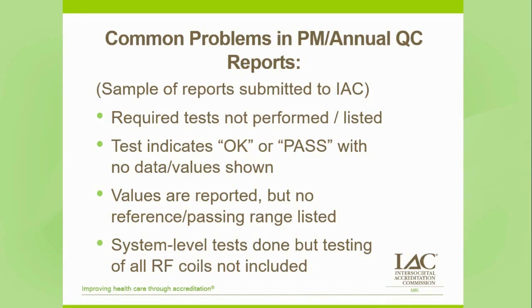We'll see just an 'okay' or a 'pass,' or we'll see a value like 129, but no indication of whether 129 is good, great, or terrible. And in looking at the individual RF coils — because those are the key interface for the signal coming from the patient getting into the system — we need to have all system-level tests, but it is quite frequent that we see a report addressing system-level maintenance and performance with no indication of performance checks or visual inspections for each individual coil. Because those are a critical link in the chain, we really do need to see that all coils are being evaluated and, where appropriate, being serviced.